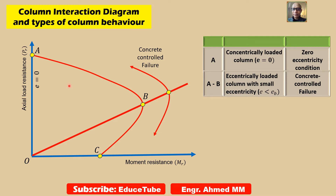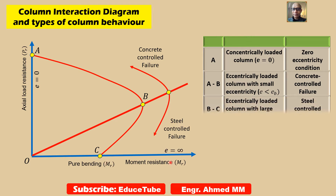An eccentrically loaded column with large eccentricity is represented by the region bounded by B and C. This region is characterized by steel-controlled failure, caused by steel yielding before concrete crushes. The horizontal axis represents an infinitely large eccentricity condition, corresponding to pure bending in the column, so eccentricity equals infinity.